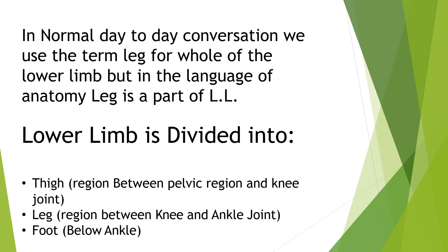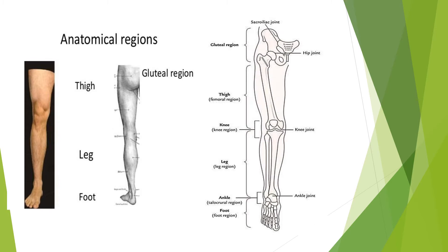In day-to-day conversation we use the term 'leg' for the whole lower limb, but in anatomical language, the leg is only a part of the lower limb. The lower limb is divided into the thigh, the leg, and the foot. The thigh is between the pelvic region and the knee joint. The leg extends from the knee region up to the ankle, and then the foot.